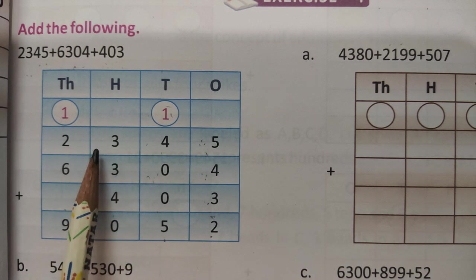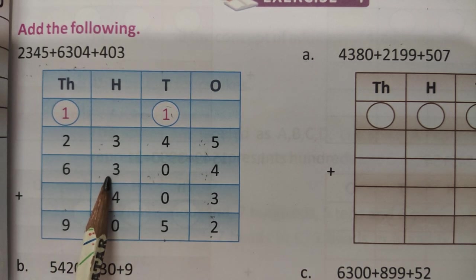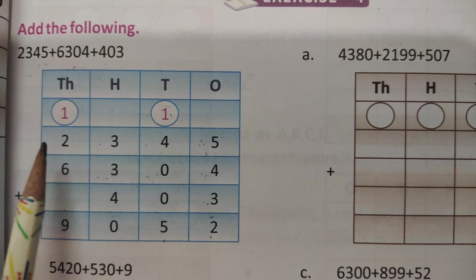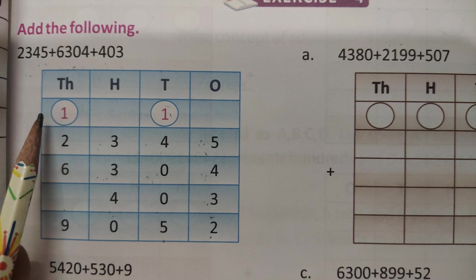Then next 100 place is 3, 3 and 4. 3 and 3 is 6, 6 and 4 is 10. So 0, 1 carry over 1000 place.